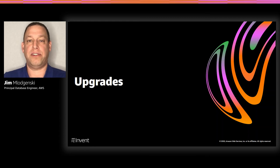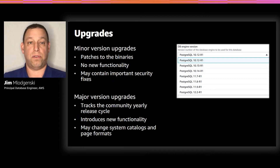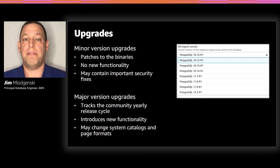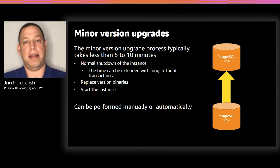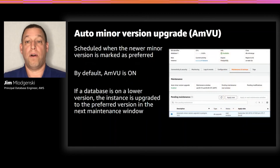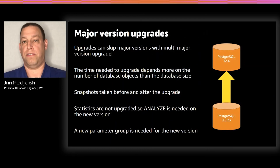How do we get new features and functionality? Major version upgrades bring things like PG13 improvements, while minor versions may release new extensions without changing core engine components like system catalogs or data types. Minor version upgrades are simple: the database shuts down, binaries are replaced, and you start back up — usually in a couple of minutes. This can be done automatically with auto minor version upgrades enabled, so whenever a new minor version is marked preferred, your next maintenance window applies the upgrade.